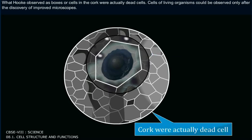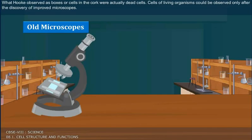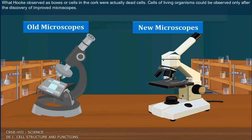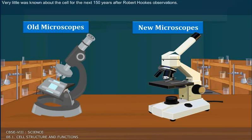The boxes or cells Hooke observed in the cork were actually dead cells. Cells of living organisms could be observed only after the discovery of improved microscopes. Very little was known about the cell for the next 150 years after Robert Hooke's observations.